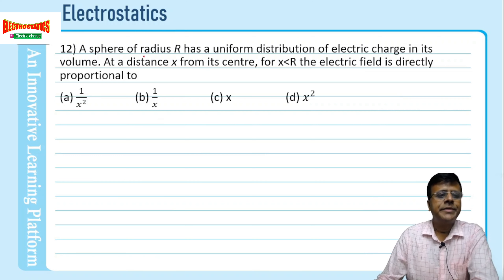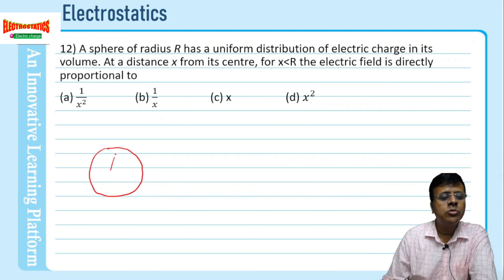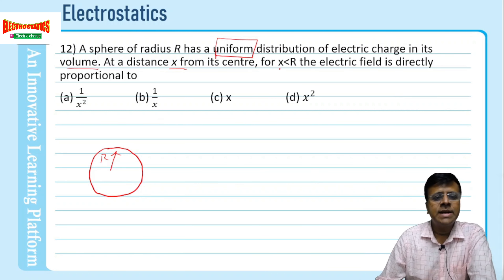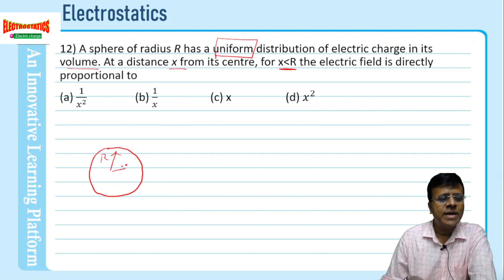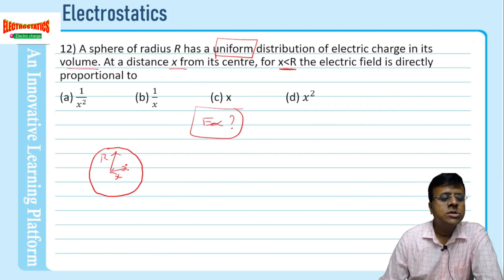There is a sphere whose radius is capital R. As you read the problem you are supposed to draw the diagram simultaneously. It is a sphere with uniform charge distribution in its volume. At a distance of x from the center, where x is less than R — what is the electric field proportional to at that point?